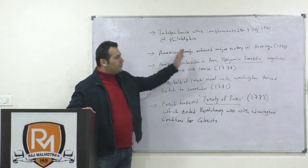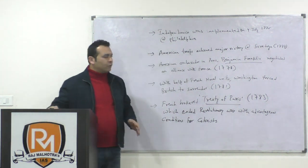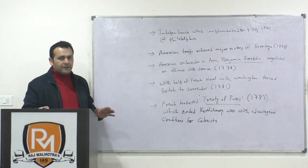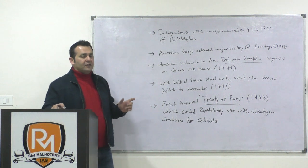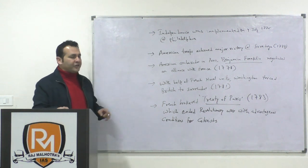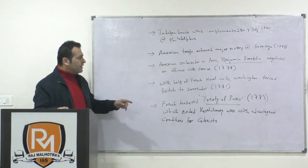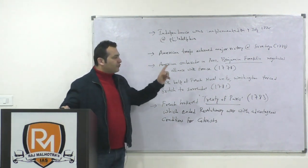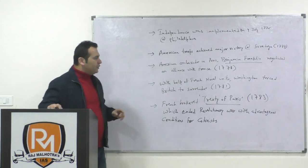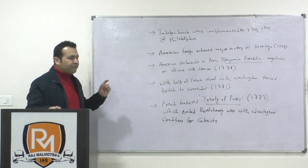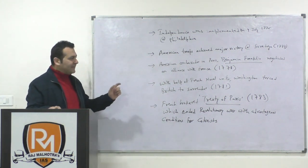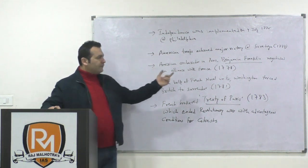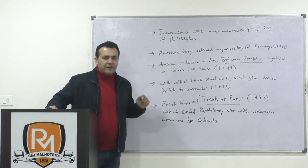Finally, American troops achieved a major victory at Saratoga in 1777. With this victory, the tide started turning. In the meanwhile, America's ambassador in Paris, Benjamin Franklin, negotiated an alliance with France, so that France would help them.